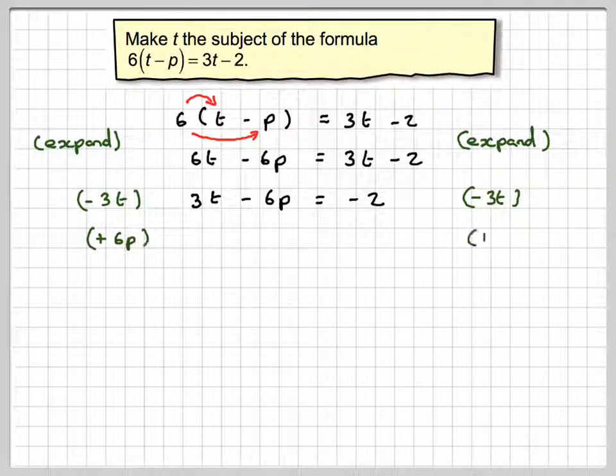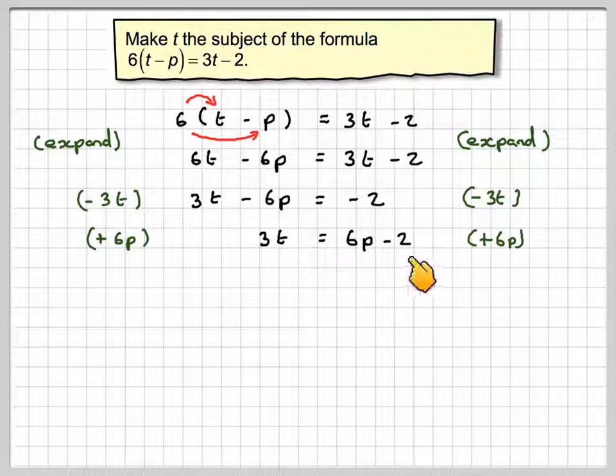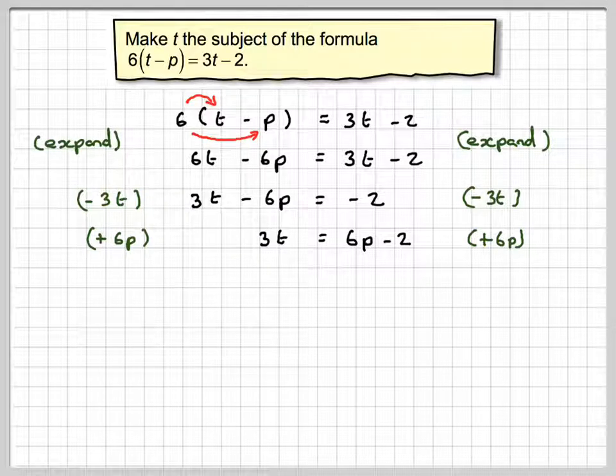Now we're going to add 6p to both sides, so we're going to get 3t on this side, and then 6p - 2 on this side. Or you could write it as -2 + 6p if you wanted to. And then the final step,